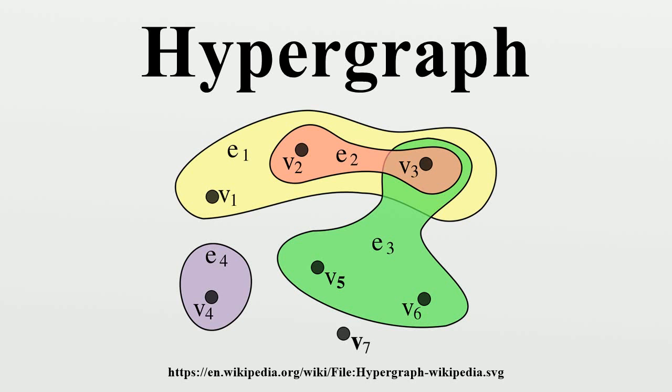Formally, a hypergraph is a pair where is a set of elements called nodes or vertices, and is a set of non-empty subsets of called hyperedges or edges.